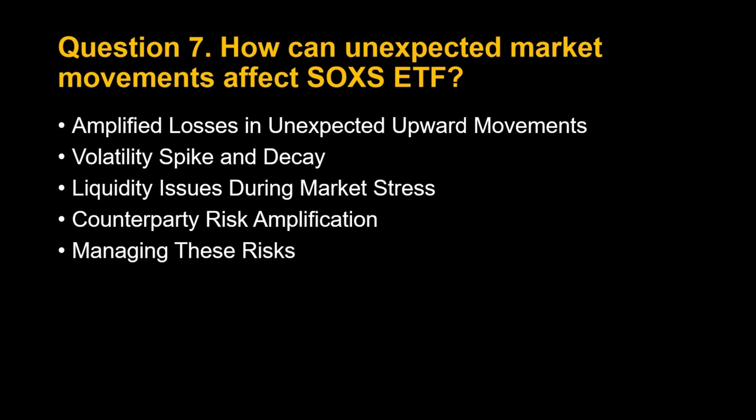2. Volatility Spike and Decay: SOXS is designed to handle some level of daily volatility in the semiconductor sector. Unexpected events can trigger sharp increases in volatility, causing the price of the index and SOXS to fluctuate rapidly. This can disrupt SOXS's daily rebalancing mechanism, leading to tracking errors and potentially missing out on capturing the full inverse return during the initial decline. Further volatility, even if the market corrects later, can exacerbate volatility decay — the tendency of leveraged inverse ETFs to underperform their targeted inverse return over extended periods due to compounding effects of rebalancing errors.